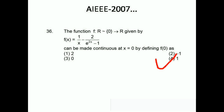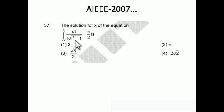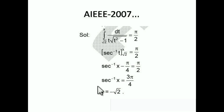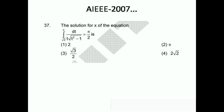Let's see one more. Find x if the integral from √2 to x of dt / (t·√(t²-1)) equals π/2. We know the integration of 1/(t·√(t²-1)) is sec⁻¹(t). So it becomes [sec⁻¹(t)] from √2 to x = sec⁻¹(x) - sec⁻¹(√2) = sec⁻¹(x) - π/4 = π/2. So sec⁻¹(x) = 3π/4, meaning x = sec(3π/4). In the second quadrant, sec is negative, so x = -√2.